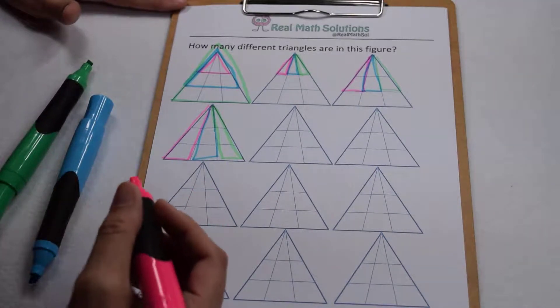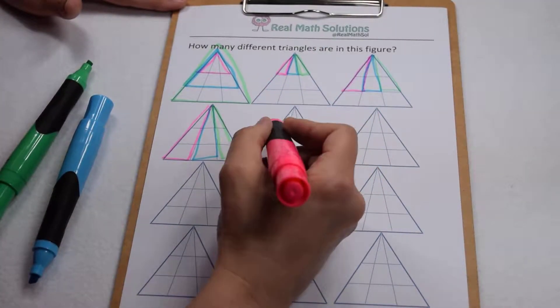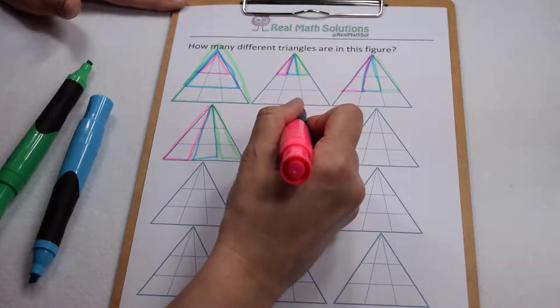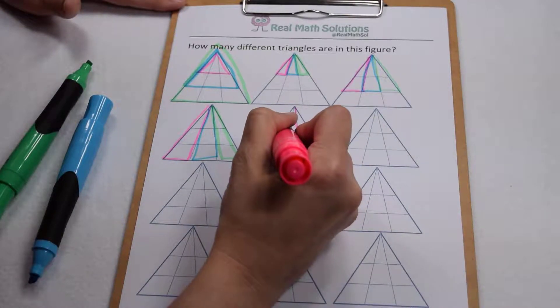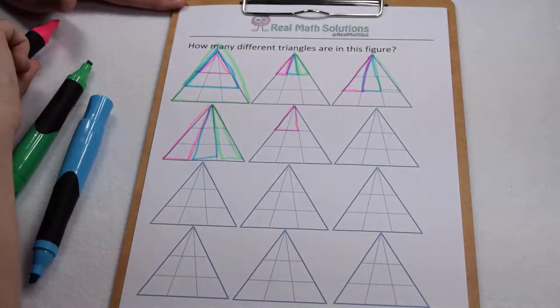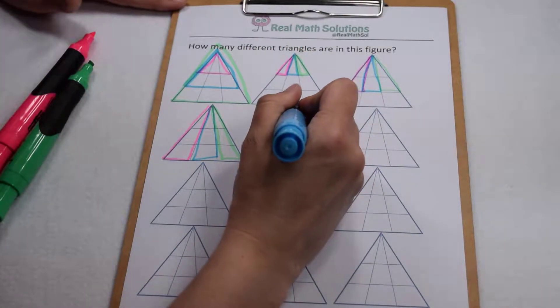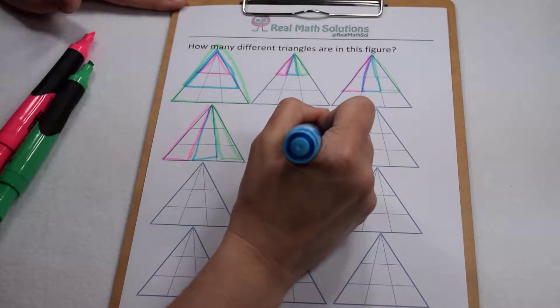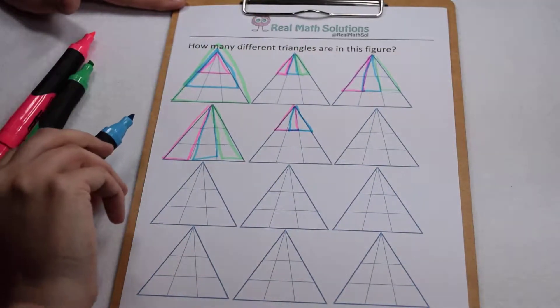Now we're gonna start putting pieces together and seeing how they overlap. Instead of using one piece here at the top, I can use two pieces and there's one triangle, and with that same idea I can use two pieces going the other way and there's two triangles.